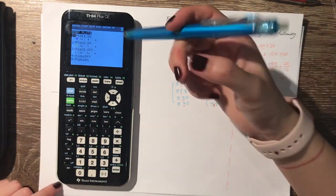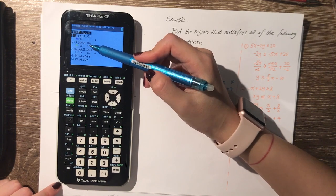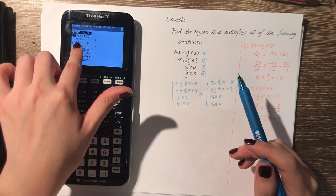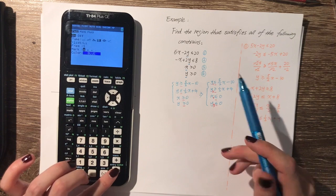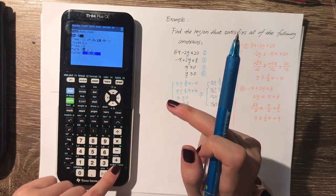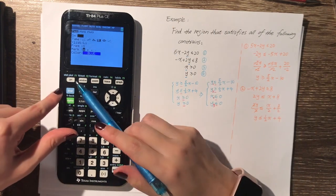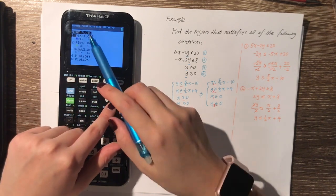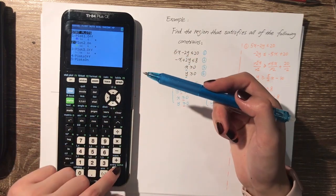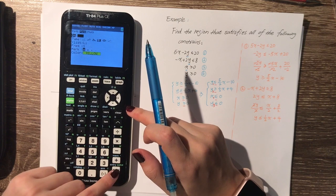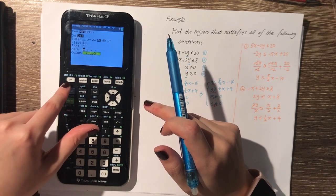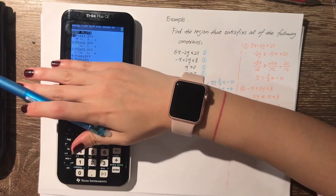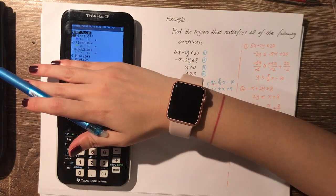I can see two stat plots are turned on, so I need to turn off all of them. I enter the first one, choose OFF, and click ENTER. Then go back to STAT PLOT via SECOND and Y=, enter the second one, choose OFF, and click ENTER. Now everything is turned off — check that plots one, two, and three are all off.